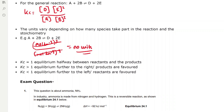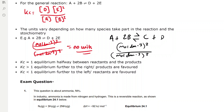The units of Kc vary depending on the stoichiometry of the reaction. For A + 2B → D + 2E, we have mol/dm³ to the power of 3 on the top and mol/dm³ to the power of 3 on the bottom, so the units cancel out leaving no units. In another reaction with 2 mol/dm³ on the top and 3 mol/dm³ on the bottom, after cancelling we get mol⁻¹ dm³, written as dm³ mol⁻¹.